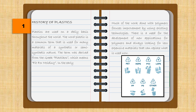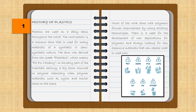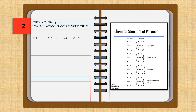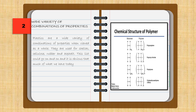In the early part of the 20th century, a big boom occurred in polymer chemistry when polymer materials such as nylon and Kevlar came on the scene. Much of the work done with polymers focuses on improvement by using existing technologies, with a need for new applications for polymers and always looking for less expensive materials that can replace what is used to mold. Plastics cover a wide variety of combinations of properties and are used for shellac, cellulose, rubber and asphalt. Much of what we have today would not be possible without plastics.